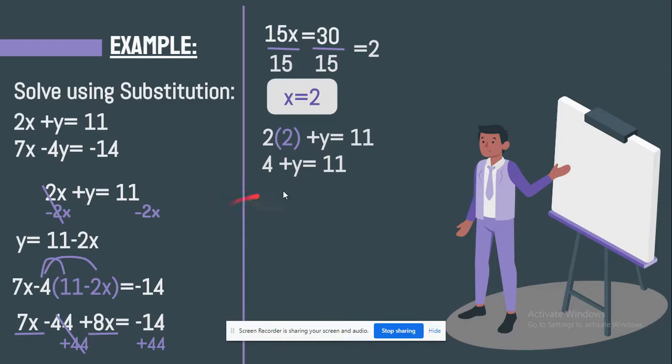Now what you're going to do, we still want to leave y alone. By doing that, we can subtract 4 by both sides. So 4 minus 4 is 0. We can cancel that. And 11 minus 4 is 7. Now we found the value of y, which is 7.